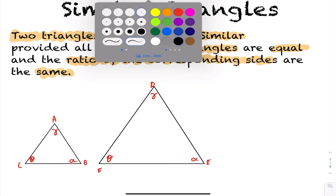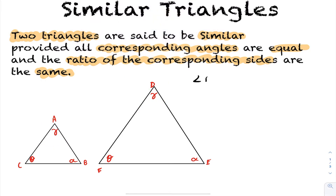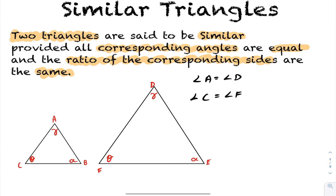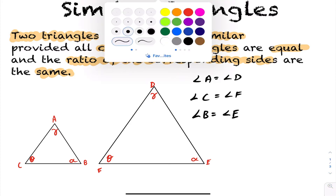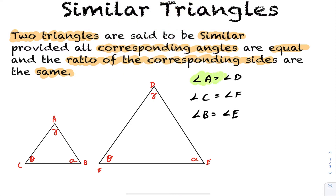Equivalently, to say that the angles are equal you can write: angle A equals angle D, angle C equals angle F, and angle B equals angle E. By doing this, we have shown that corresponding angles are equal.